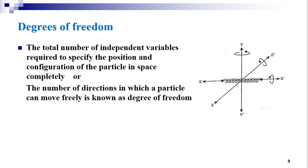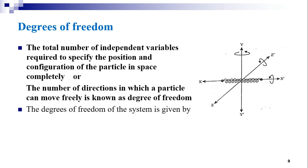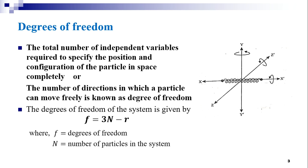A molecule in a rigid body can have three motions of vibration along any of the three coordinate axes in addition to its three motions of translation. Hence, the degrees of freedom of the system is given by the equation F = 3N − R, where F is the degrees of freedom, N is the number of particles in the system, and R is the number of independent relations among the particles.